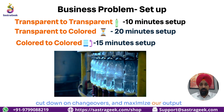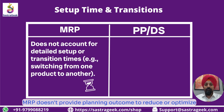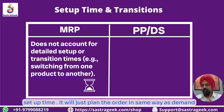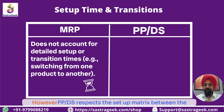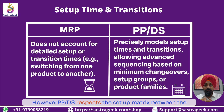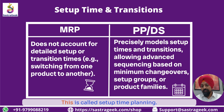By using a planning system that understands these different setup times, we can arrange longer runs of similar products, cut down on changeovers, and maximize our output. MRP doesn't provide planning to reduce or optimize setup time — it will just plan orders in the same way as demand comes. However, PPDS respects the setup matrix between products and provides an optimized plan by reducing setup time. This is called setup time planning.